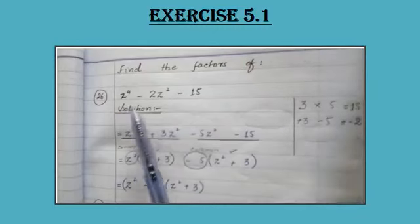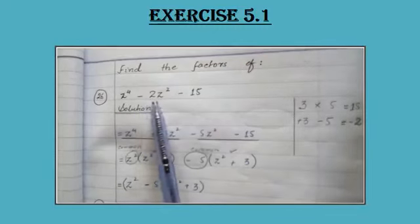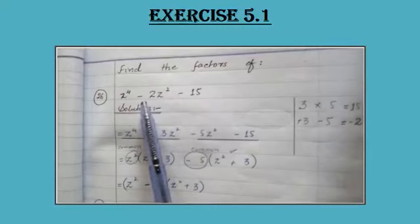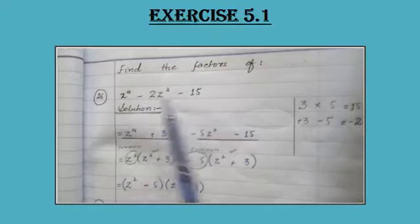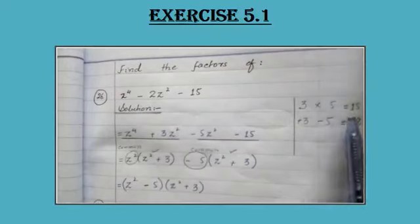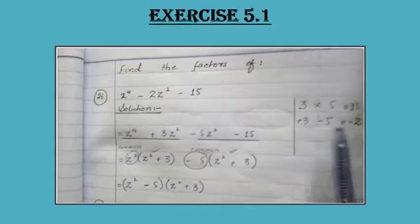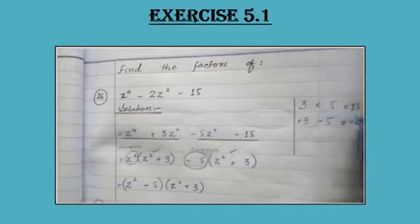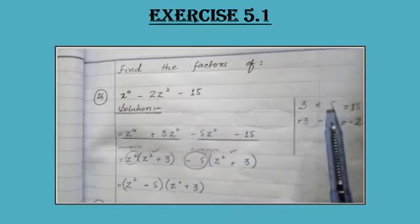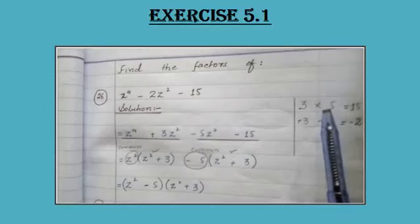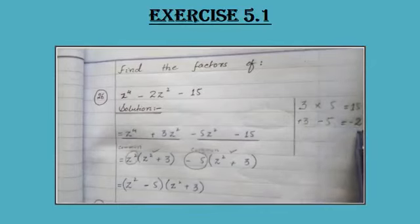The coefficient of the middle term is minus 2. Now you need to find two numbers whose product is 15 and whose sum (with appropriate signs) gives minus 2. Multiply any two numbers to get 15, then adjust the plus or minus signs so that their sum gives minus 2.